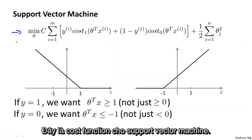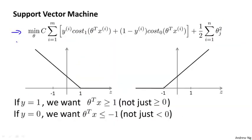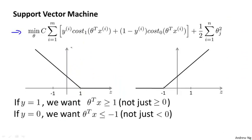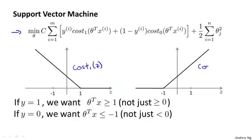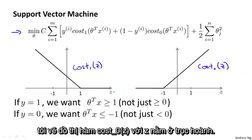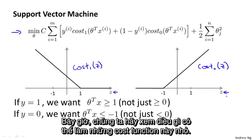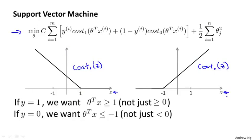Here's my cost function for the support vector machine. On the left I plotted my cost-one-of-z function used for positive examples, and on the right I plotted my cost-zero-of-z function, where z is on the horizontal axis. Now let's think about what it takes to make these cost functions small.